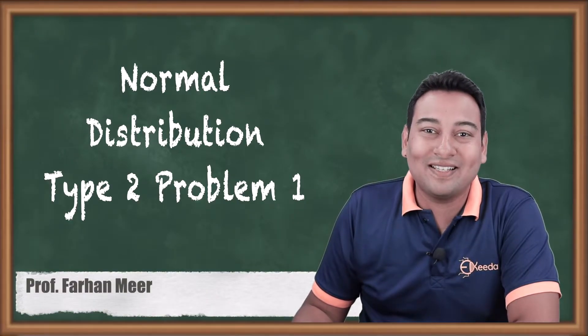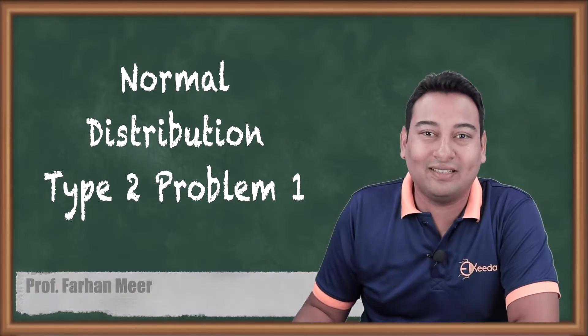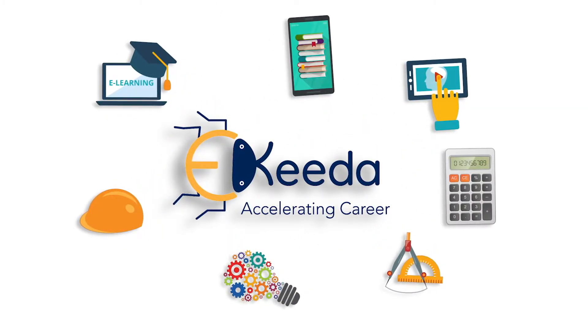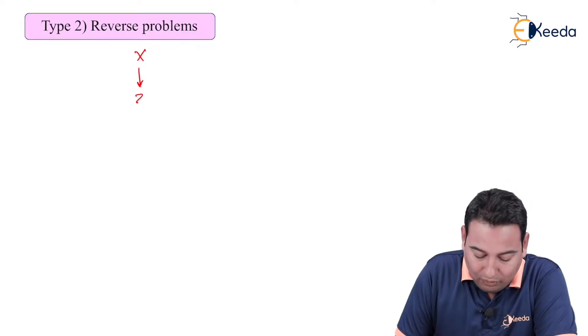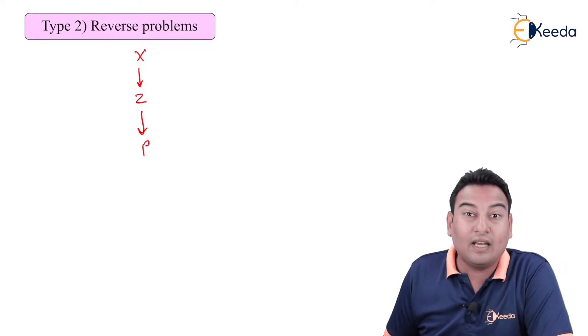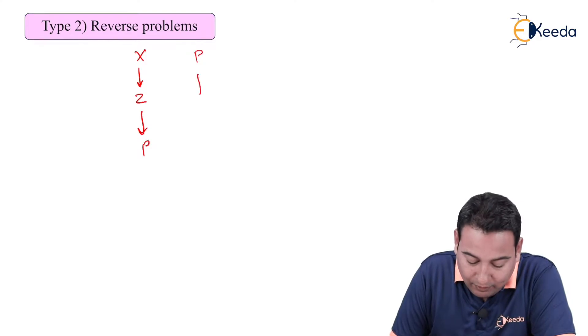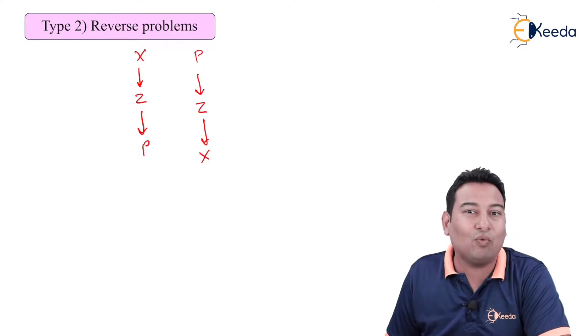Hello friends. In this video we will be discussing normal distribution type 2 reverse problems and we will discuss one example on it. Till now we have covered forward problems, that means x is provided and through x we found out probability. Now we will discuss reverse problems. Reverse problem means probability is given and we need to find out x — exactly opposite to what we did till now.